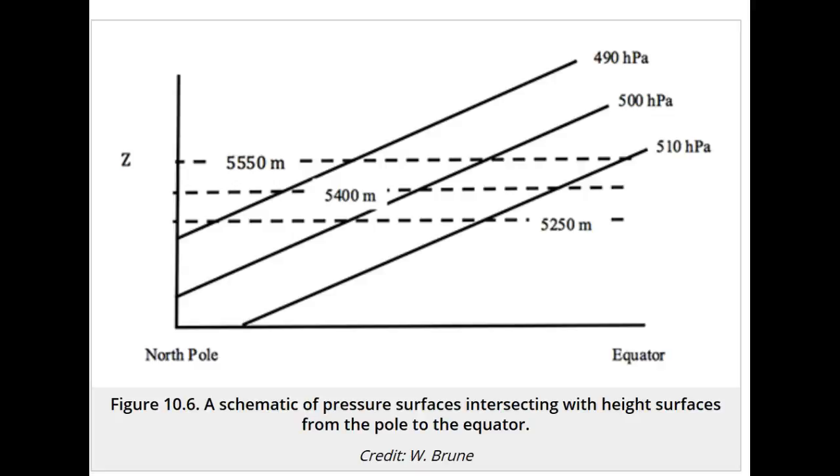This schematic shows the relationship between height surfaces and pressure surfaces. Typically, pressure surfaces slope downward in height from the equator, where it is warmer, to the pole, where it is colder.